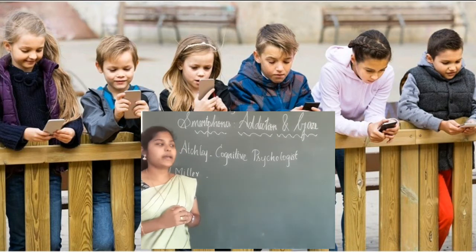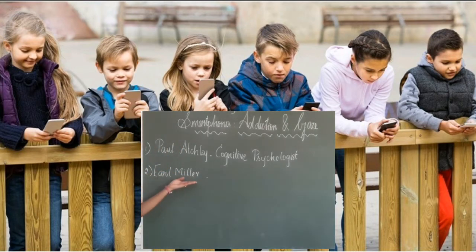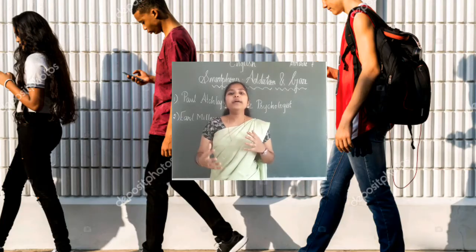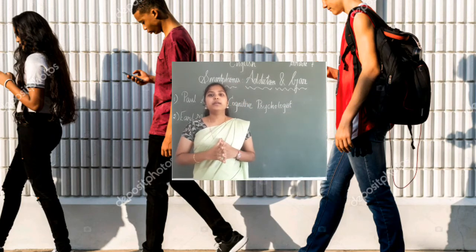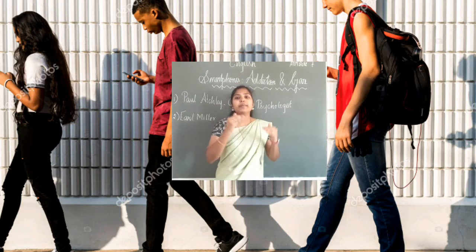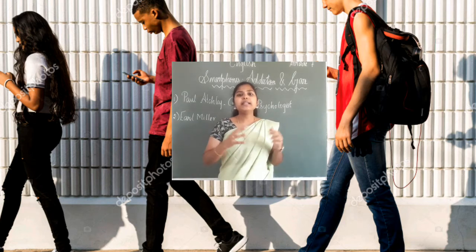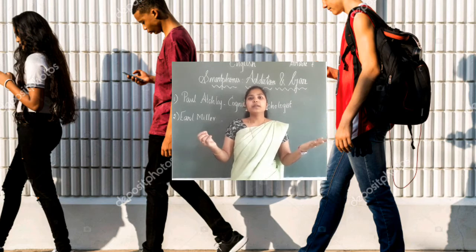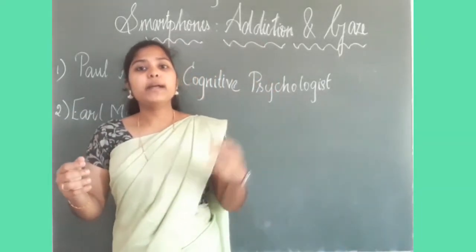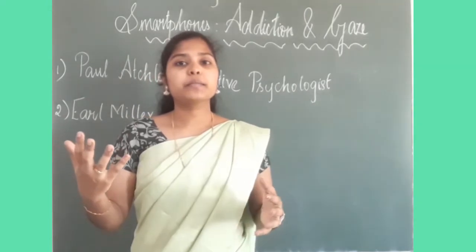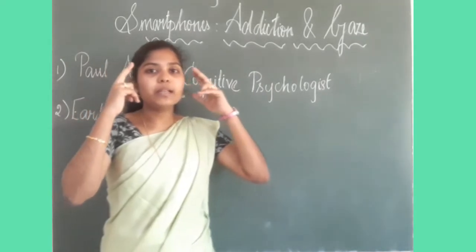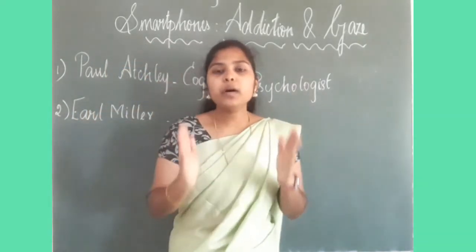Next, Earl Miller is a neuroscientist and he is saying that the over usage of smartphones is declining brain function. At one time, can we do two works? No. While speaking, can I write? While writing, can I speak? While cooking, can I do any other work? No. Our brain can do one work at a time.